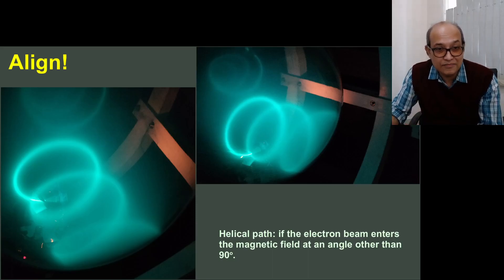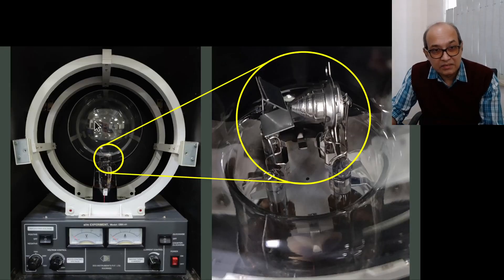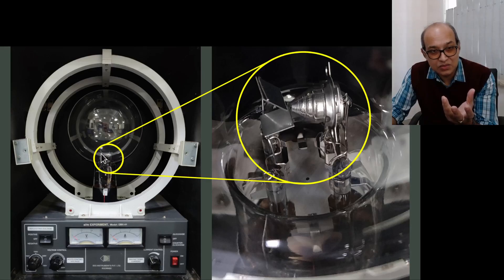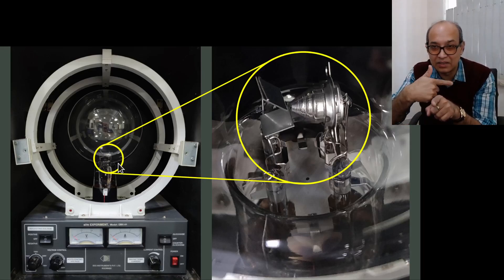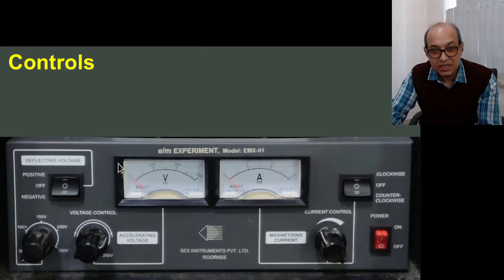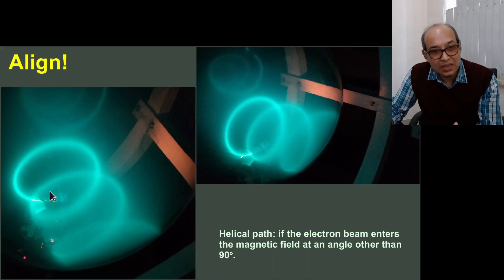In the setup, this glass bulb we can rotate it about the vertical axis. So as we turn it about the vertical axis, this orientation of this cathode-anode or this electron beam which is coming out of the anode side, that will have an angle with respect to the magnetic field. So you can turn it, and as you turn it, it will create a helical trajectory.